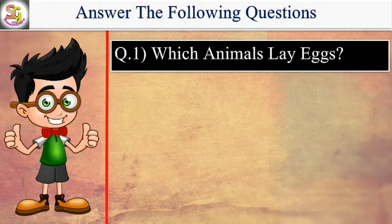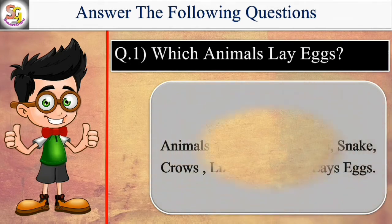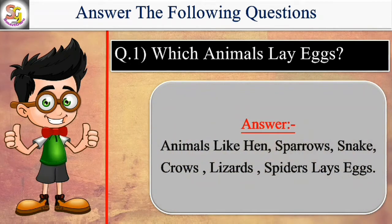Which animals lay eggs? Animals like hen, sparrows, snakes, crows, lizards, spiders lay eggs.